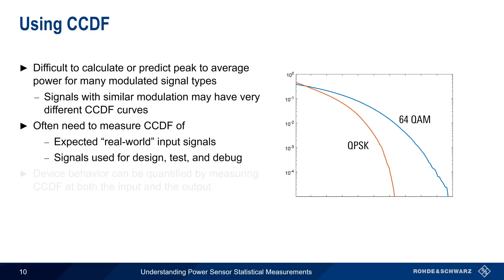Another way that CCDF can be used is by observing the changes in CCDF as the signal moves through various components. That is, we measure CCDF at both the device input and the device output, and make note of any changes.